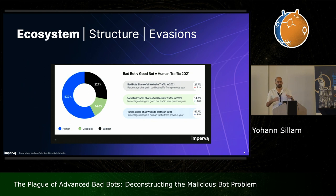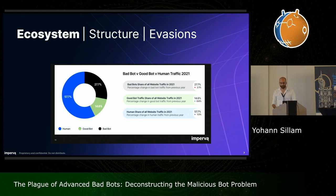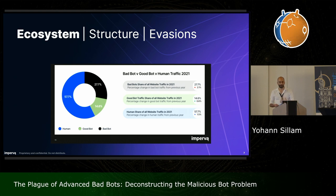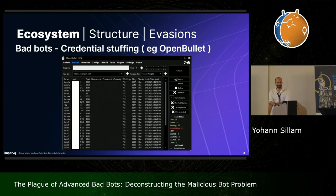Now let's talk quickly about telemetry. It was estimated that in 2021, 43% of the whole internet traffic was due to bots. And if we focus a bit, 27% of the whole internet traffic was due to bad bots, with an increase of 2% compared to the previous year. So what exactly is this bad bot traffic? We're going to go over a few examples of bad bots and explain how they work.